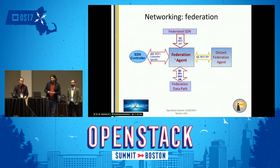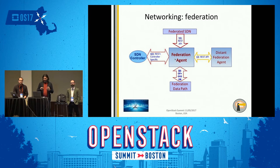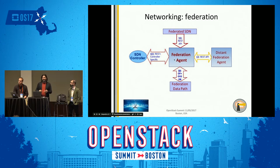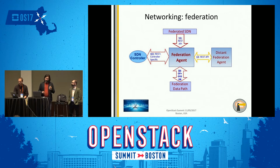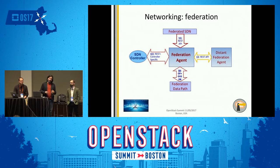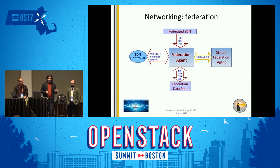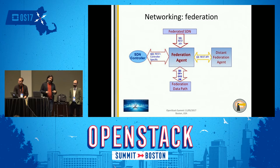The federated SDN component receives a list of network segments, which get passed to the federation agent in the form of tables containing tenants, networks, and sites. The federation agent interacts with the distant federation agent to agree on which networks need to be federated. It then passes information southbound via OpenFlow to establish the federation tunnel, and westbound to the corresponding SDN controller to attach local networks to the federated data path.